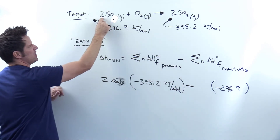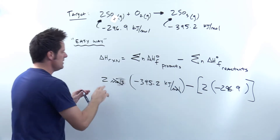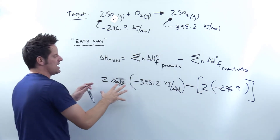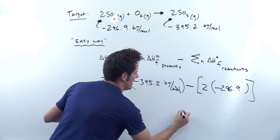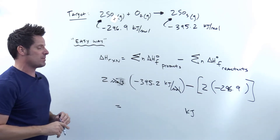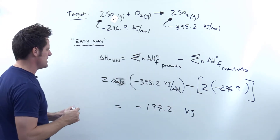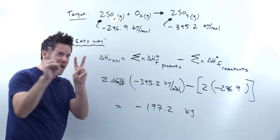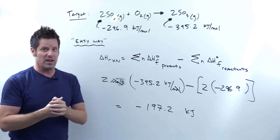The coefficient in front of SO2 is 2, so I insert negative 296.9 multiplied by 2 for the reactants. I take 2 times negative 395.2 for products, subtract 2 times negative 296.9 for reactants — the negatives interact so it becomes a positive contribution — and the final units are kilojoules since moles cancel. Plugging into the calculator gives negative 197.2 kilojoules. That is the answer for the easy way.